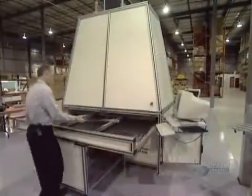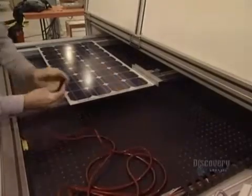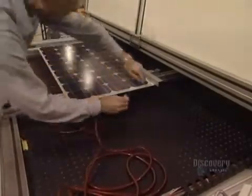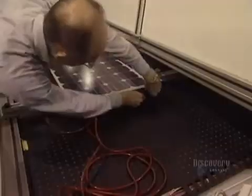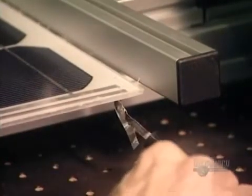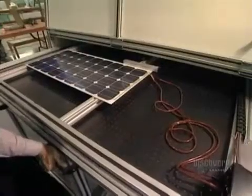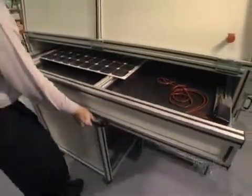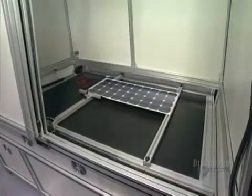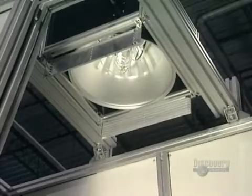They now proceed with a test. The panel is placed in a solar simulator. Negative and positive contacts of the solar panel are connected to a voltmeter. The panel is inserted into the simulator and a powerful lamp will illuminate it. The voltmeter is read to make sure that the panel supplies the electric current required.